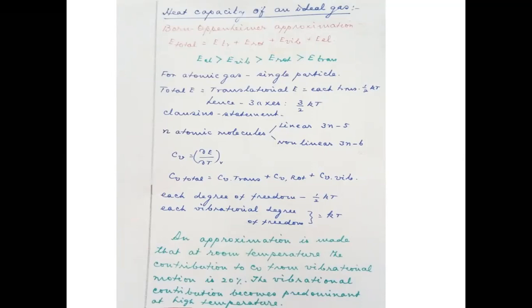A single particle has only translational motion, with each translation contributing ½kT. Translation can occur along three axes, so the total contribution is 3/2 kT. Single particles show no rotational motion because the moment of inertia in all three rotational axes is negligible, and they cannot vibrate because they have no bonds. So the total energy of a single particle or atomic gas is 3/2 kT. This is called the Clausius statement.